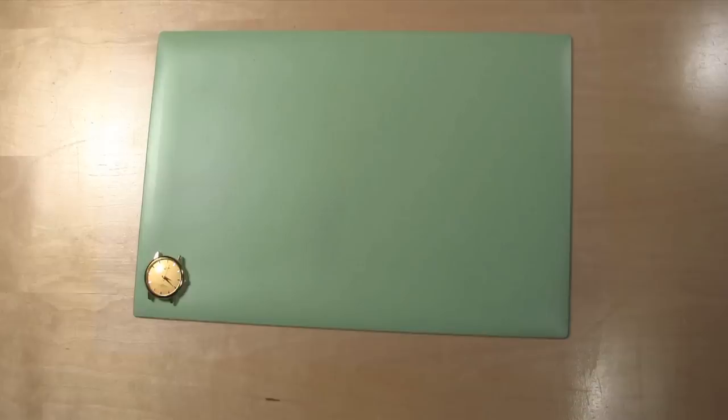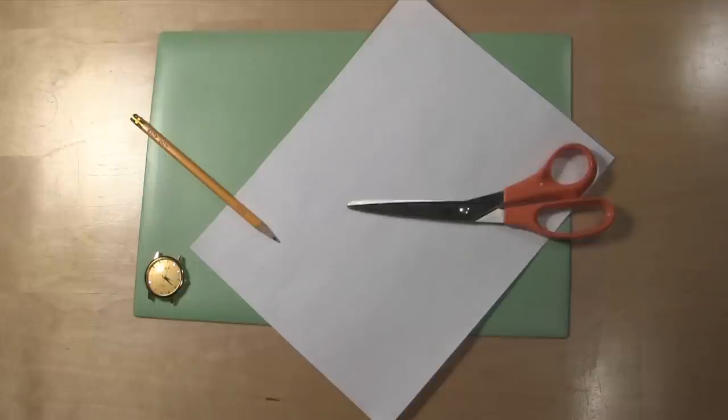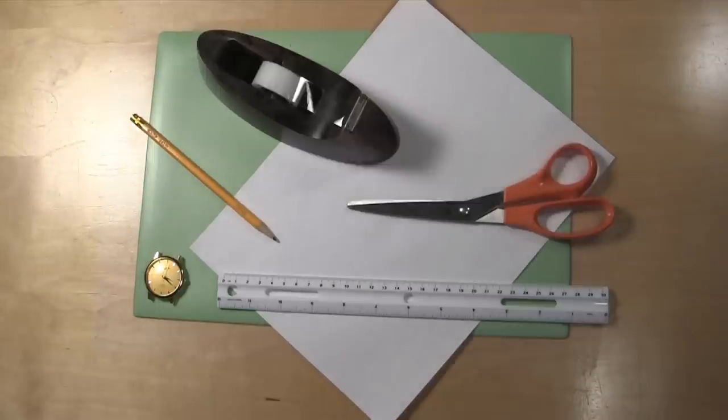The tools you'll need to measure your watch band are a pencil, a piece of paper, a pair of scissors, a ruler, tape, and an optional digital gauge.